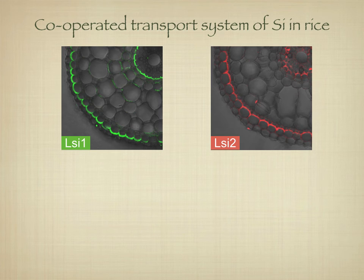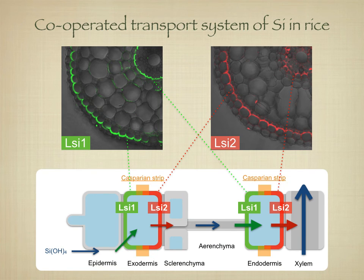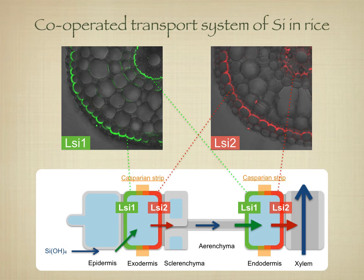LSI-1 is a channel-type transporter permeable to silicon and belongs to the aquaporin family, while LSI-2 is an efflux transporter of silicon. Both LSI-1 and LSI-2 are highly expressed in the mature root region. LSI-1 and LSI-2 are localized at the same root exodermis and endodermis cells, where the Casparian band is located.